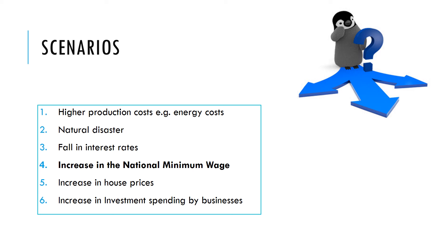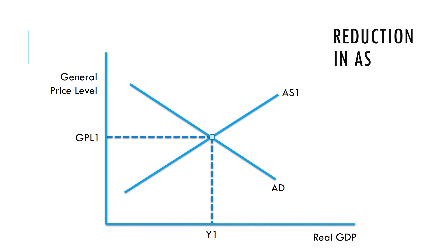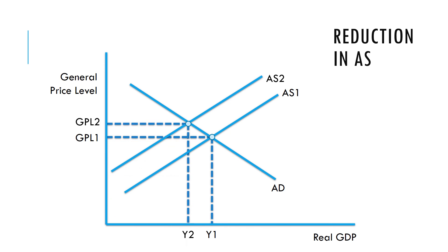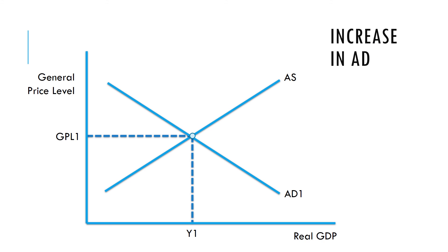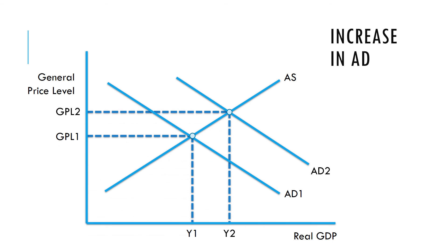An increase in the national minimum wage would normally increase businesses' costs, causing a reduction in aggregate supply, resulting in a higher price level and a lower level of output. An increase in house prices, through the wealth effect, would normally lead to increased consumption, increasing aggregate demand and raising both the price level and real GDP.